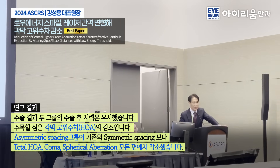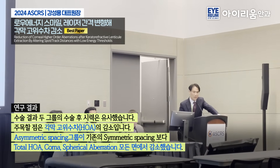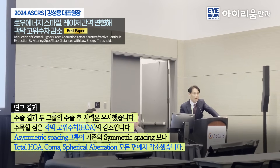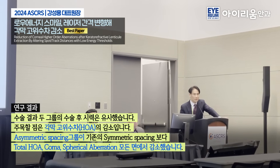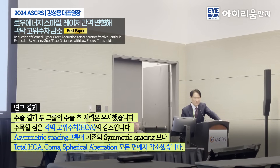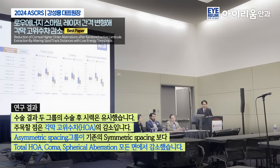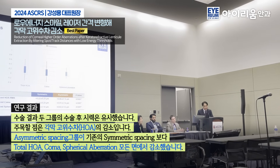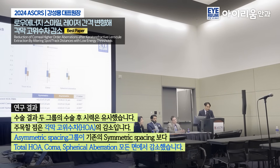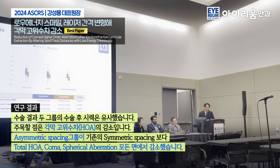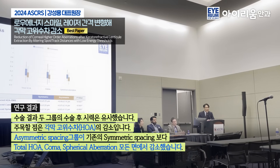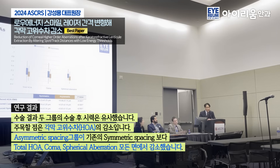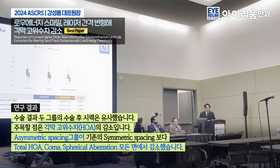For high-order aberrations — total coma and spherical aberration — there was a staggering amount of less induction of corneal high-order aberrations with the same femtosecond laser platform. Looking at the inductions with the red asymmetric boxes, we even see those spots going below zero, meaning we are actually decreasing some coma and spherical aberration.